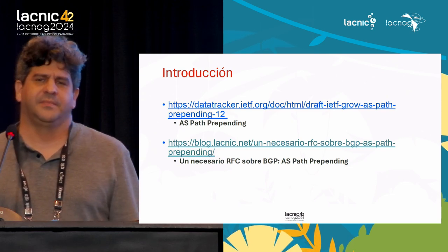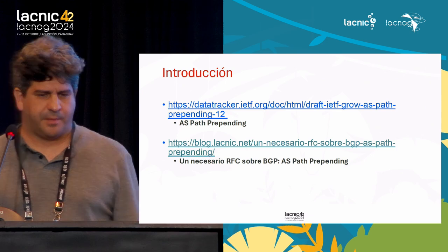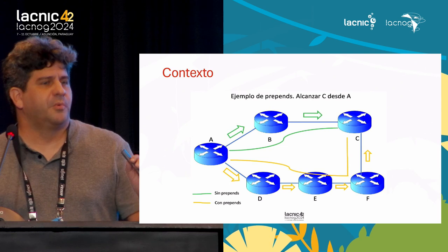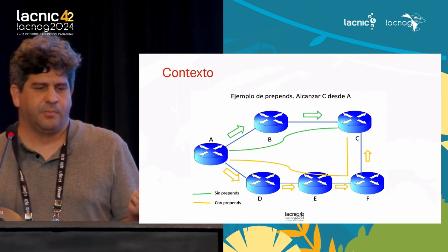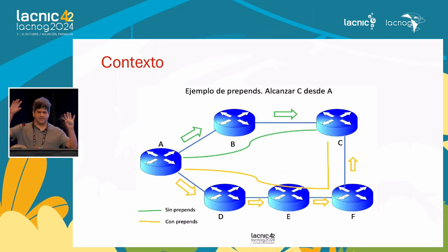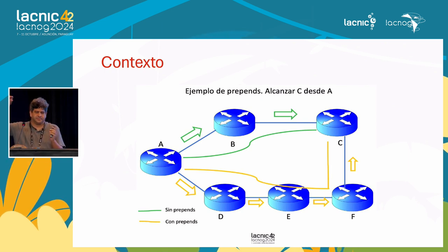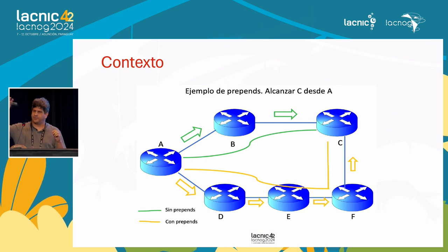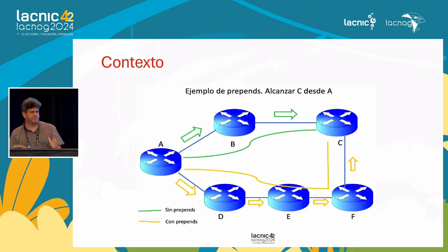This document led to writing a post where we discuss AS path prepending. To set the context, if you look at this diagram — if you wish to go from router A on the left to reach router C, under normal conditions you follow the top path, router A to B to C. However, when using prepends, we follow the path at the bottom. If you include prepends in router C, traffic from A to C will follow the bottom path. This is traffic engineering.